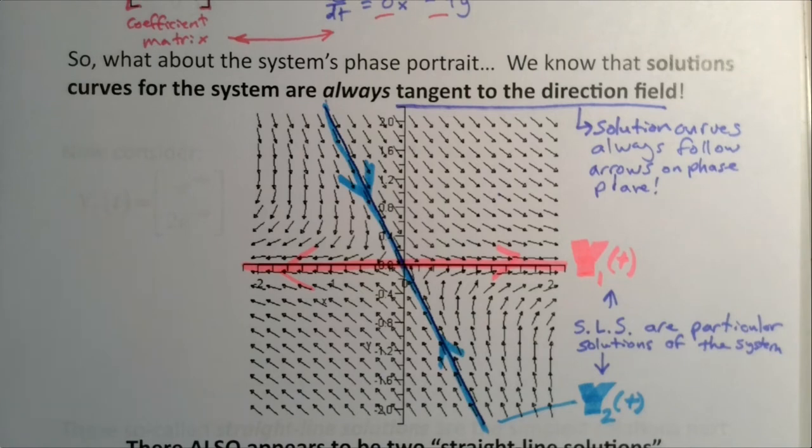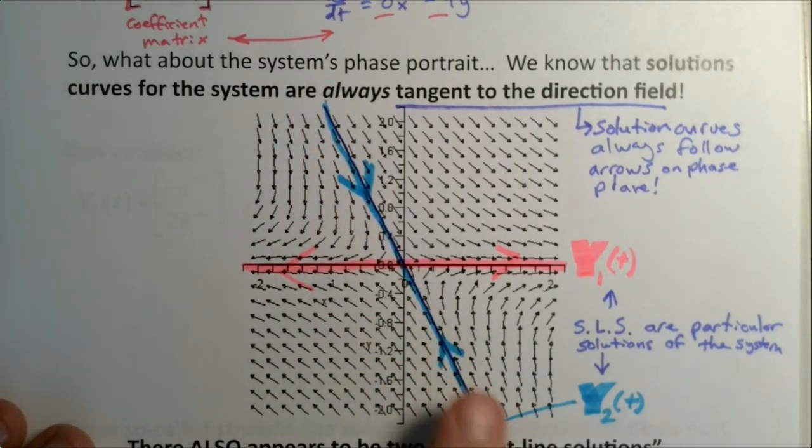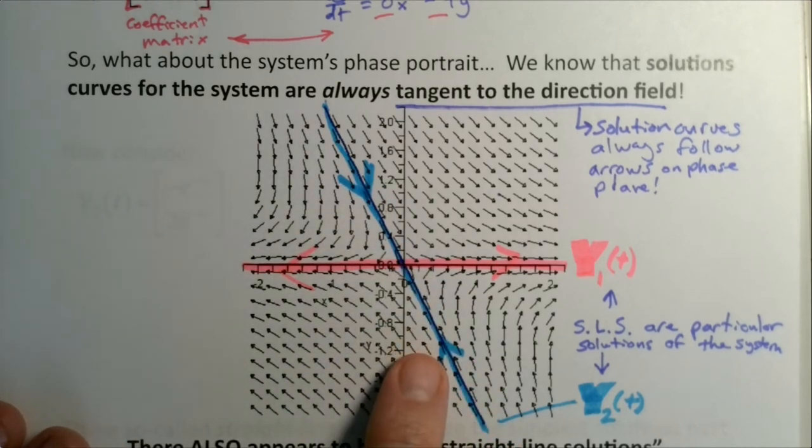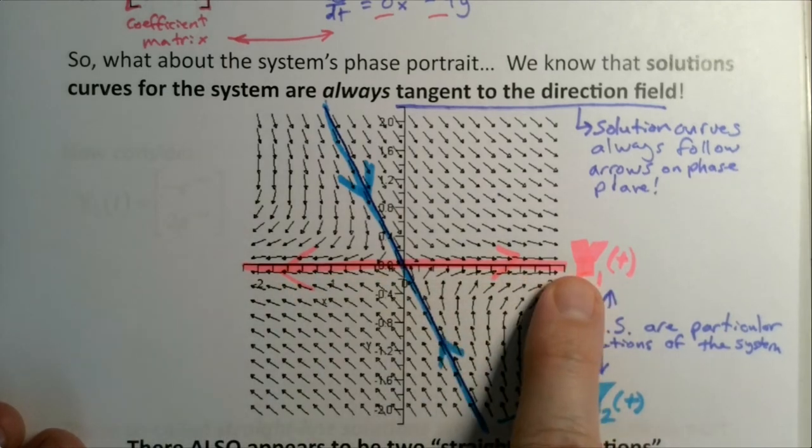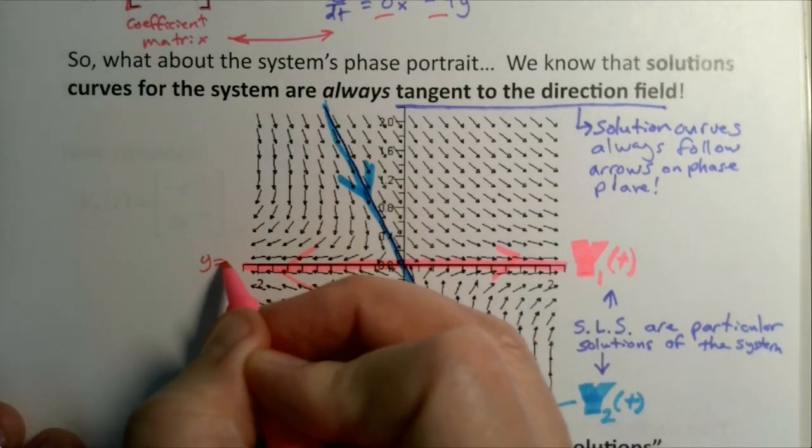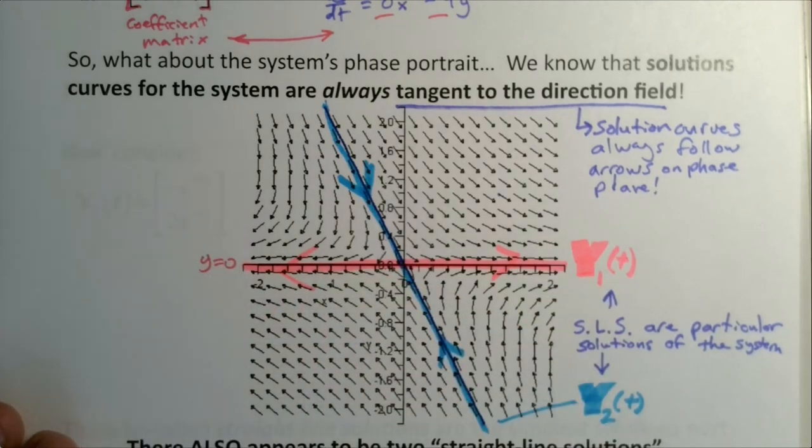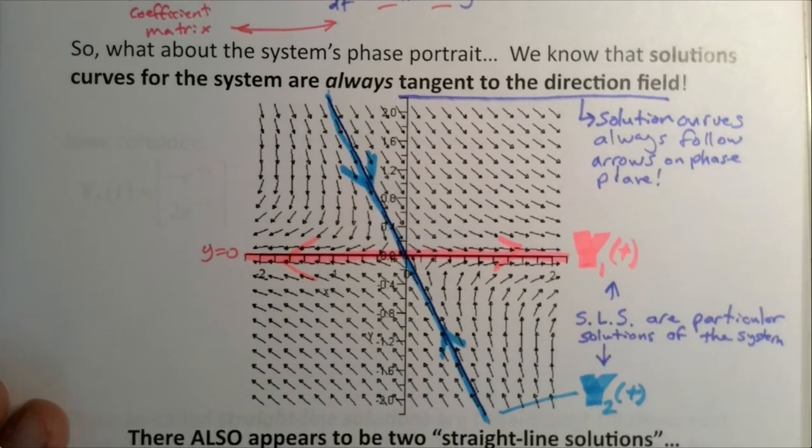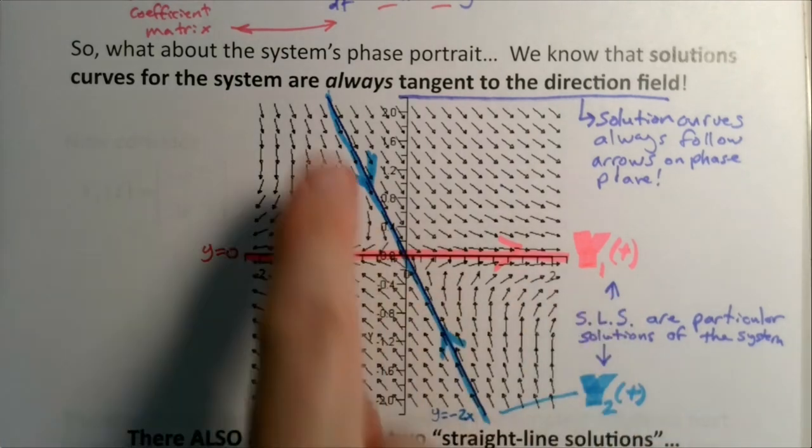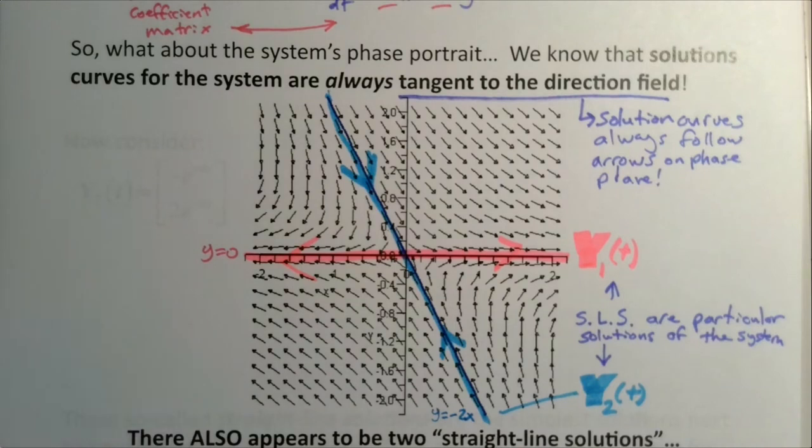What you might notice are a couple of things that are really interesting about this. The first of which is this guy definitely looks like a line. Its equation, if you had to guess, it's going to have a negative slope. It's probably something like y equals, I don't know, maybe like negative 2x or something like that. And this guy right here, this is a straight line, and that's just the x-axis. So that actually has an equation that's knowable: y equals zero.